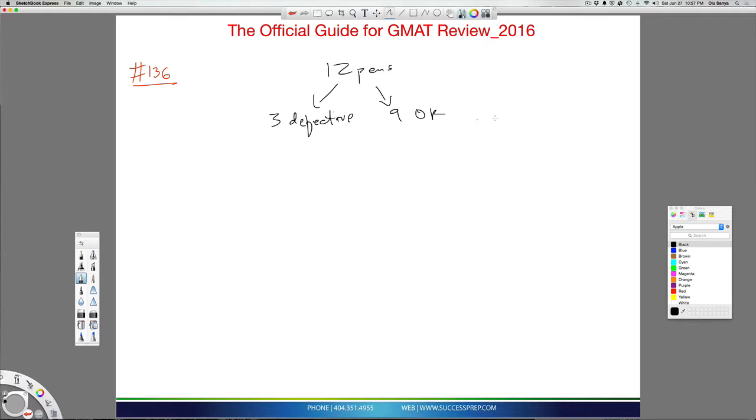So the definition of probability is focus over total, meaning whatever we want over the total.